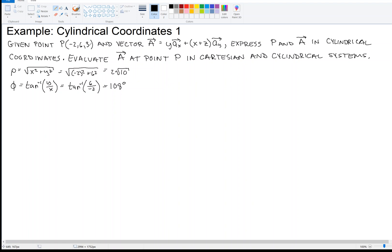And remember z is equal to z, so that's 3. So our point then becomes, the point in Cartesian coordinates of (-2, 6, 3) is equal to (2√10, 108°, 3), or up to 3 significant digits (6.32, 108°, 3.00) in cylindrical coordinates.